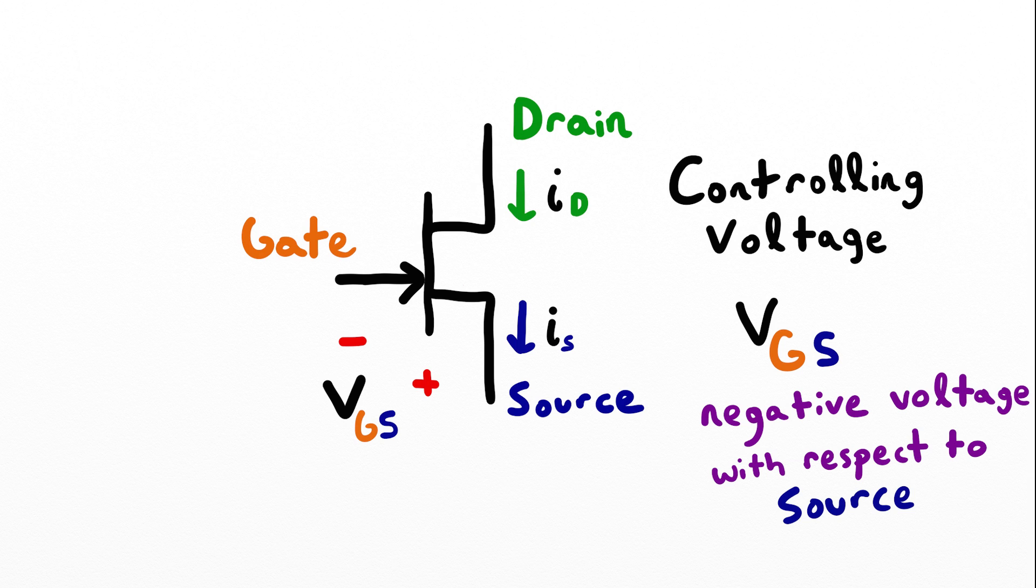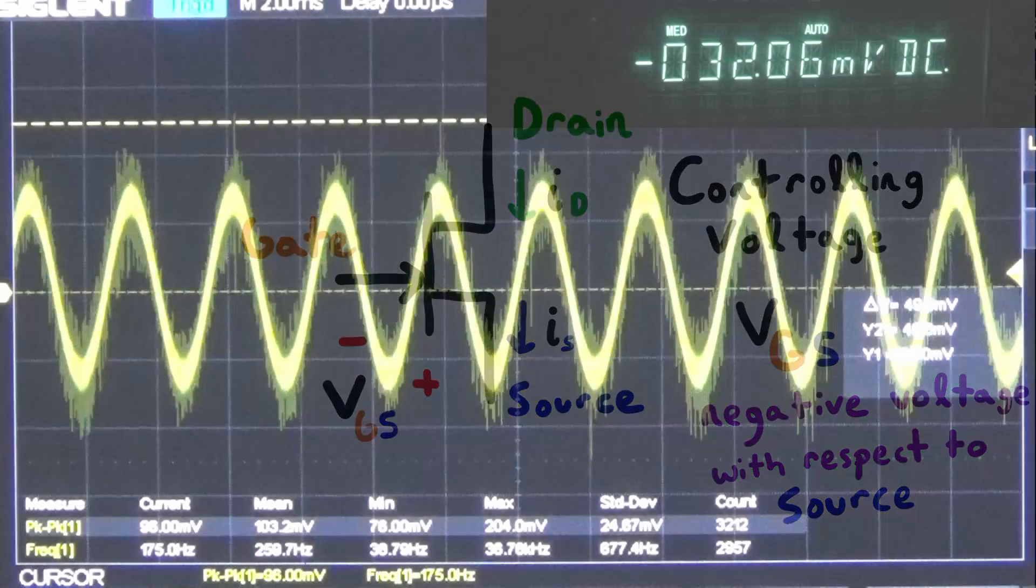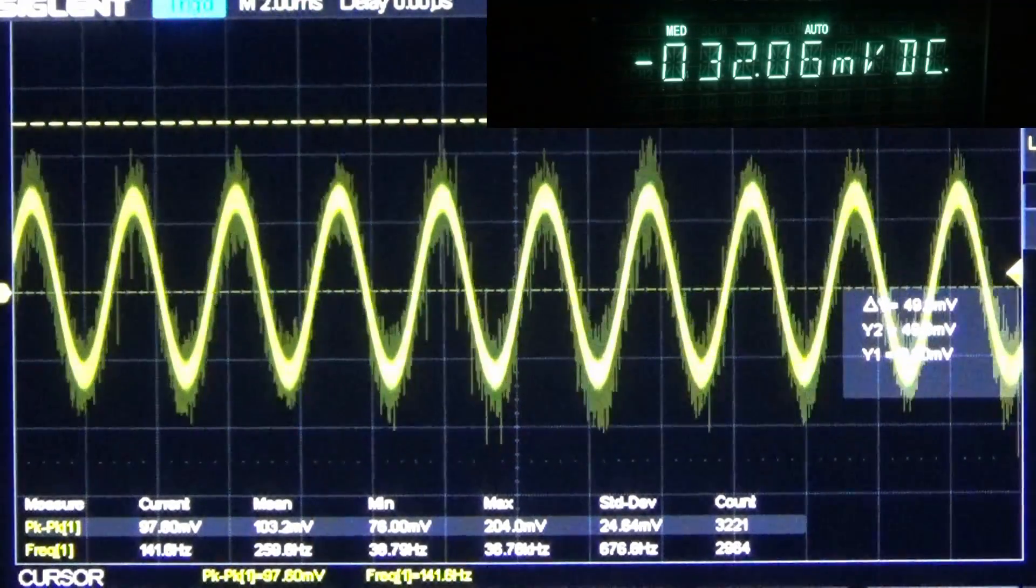This gate source voltage needs to be negative with respect to the source. In this application I'm going to ground the source, meaning that we need to have a negative gate to source voltage because ground is at zero volts. Let's take a look at the behavior of the output as we vary this gate to source voltage.